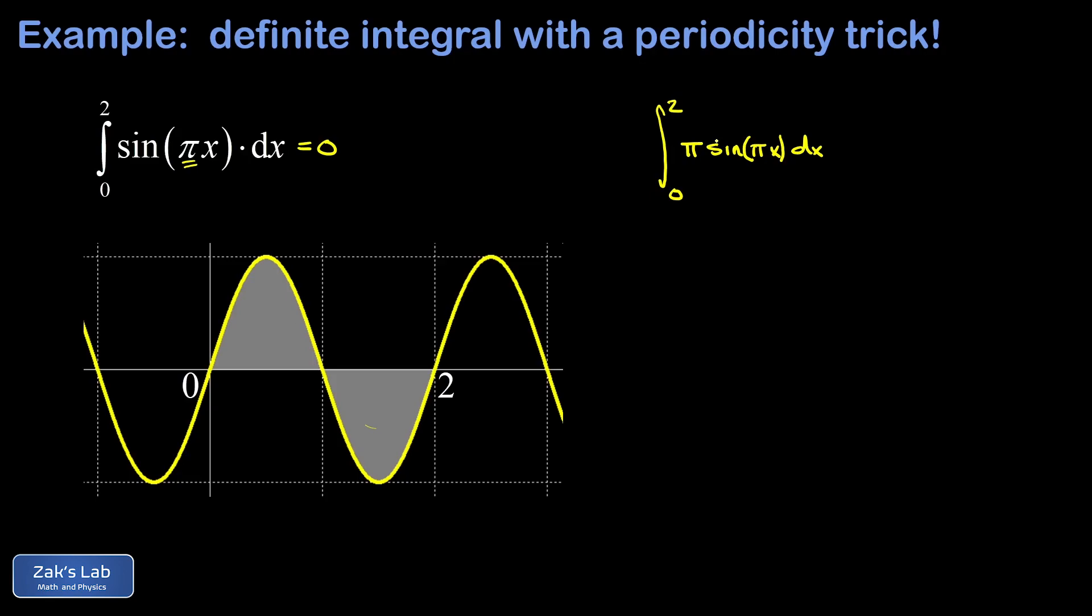it's going to make it easier to see how the chain rule operates backward. So I can do that, provided that I compensate out in front with a 1 over pi. That 1 over pi is a spectator, as we guess the antiderivative.